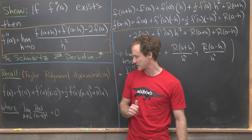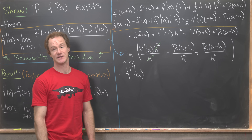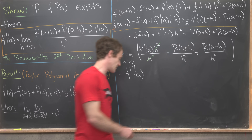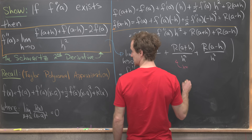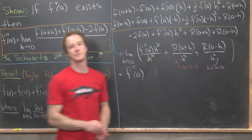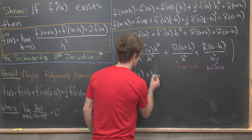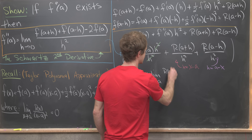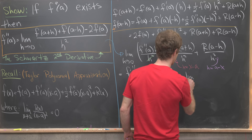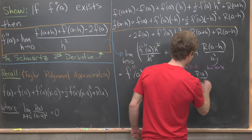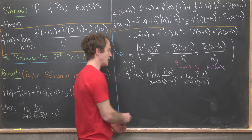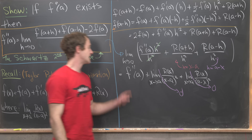Because of our Taylor polynomial expansion, the last two remainder terms equal zero. We can see this with a change of variables: let h equal x minus a in the first remainder term and h equal a minus x in the second. That gives us the limit as x goes to a of r of x over x minus a squared, plus the limit as x goes to a of r of x over a minus x squared. By our Taylor polynomial assumption, each of these goes to zero, giving us the result we wanted.